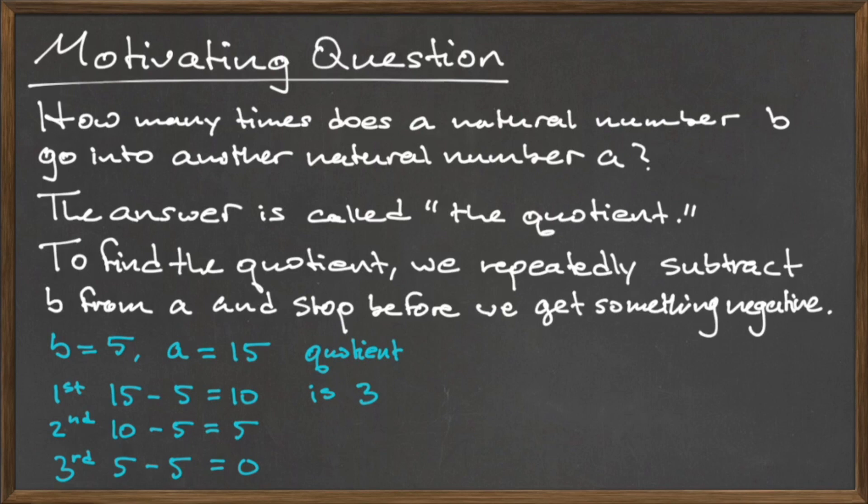The number at the very end of this list, 0, is known as the remainder. So, the division of 15 by 5 is 3 with remainder 0.